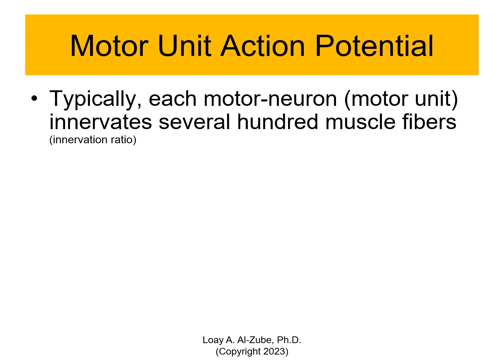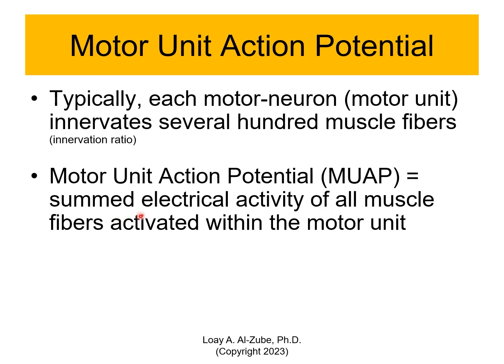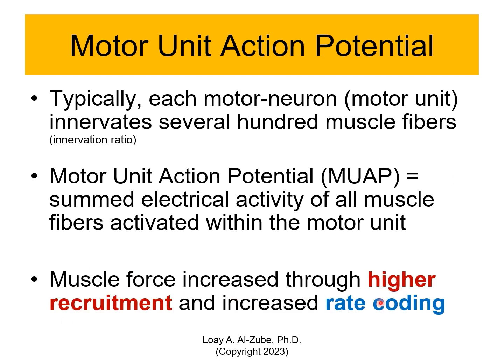Each motor neuron innervates several hundred muscle fibers, and we have something called innervation ratio — how many fibers are linked to each motor unit — and each of us is different. A motor unit action potential is the electrical activity of all muscle fibers activated within the motor unit. Muscle force increases through higher recruitment and increased rate coding. If I have a larger number of fibers recruited, I'm going to create more force.